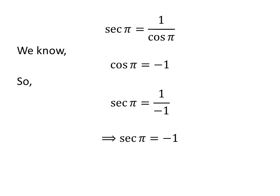As 1 upon minus 1 is minus 1, so secant of pi is equal to minus 1.